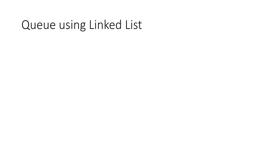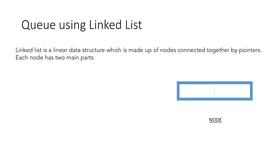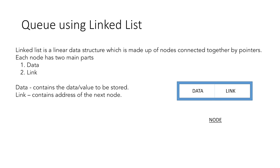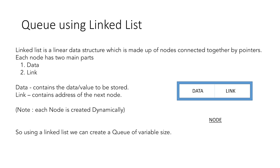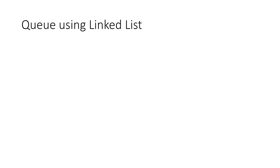To solve this problem we will implement queue using linked list. As we know, linked list is a linear data structure made up of nodes connected together by pointers, where each node has two main parts: the data and the link part. The data contains the value to be stored and the link part contains the address of the next node. Since we create each node dynamically, we can create a queue of variable size and increase or decrease it as needed.